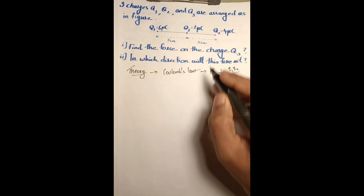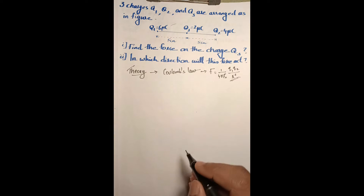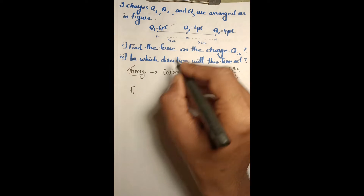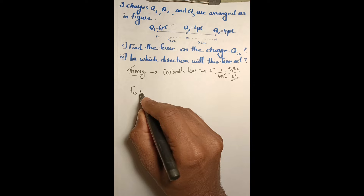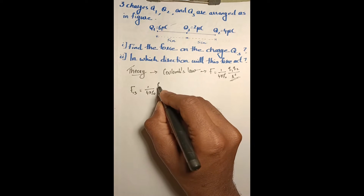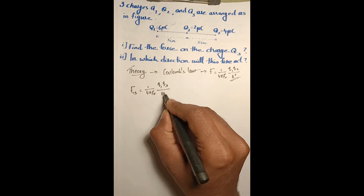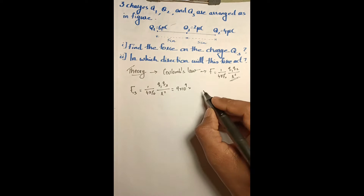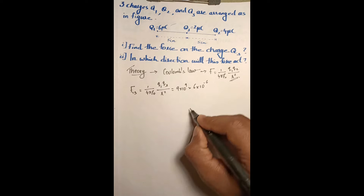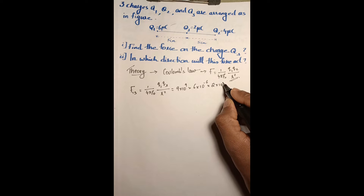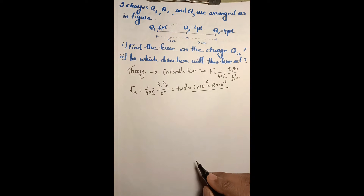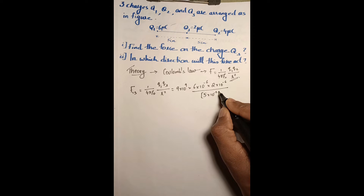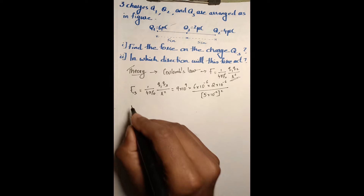Since there are two pairs of charges, two different forces will be present. The force between q1 and q3, let it be F13, equals 1 over 4 pi epsilon-zero times q1 times q3 divided by r squared. Substituting values: 9 times 10 to the 9, times 6 times 10 to the minus 6, times 2 times 10 to the minus 6, divided by 5 centimeters converted to meters — that is 5 times 10 to the minus 2 — whole squared.